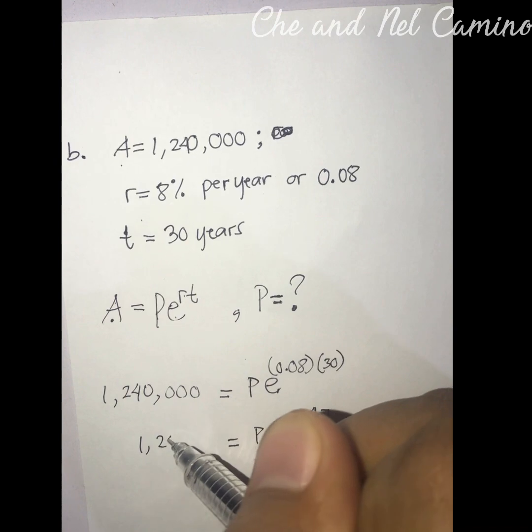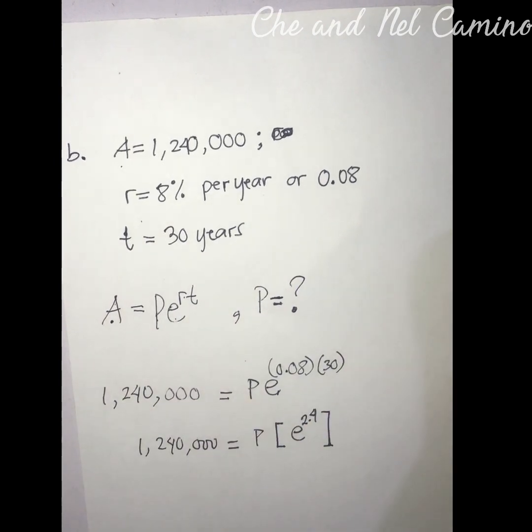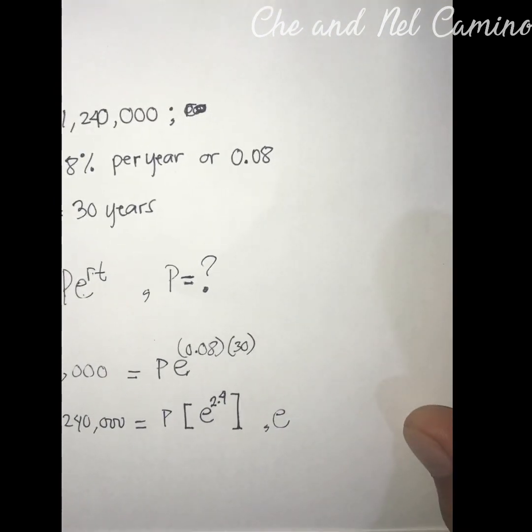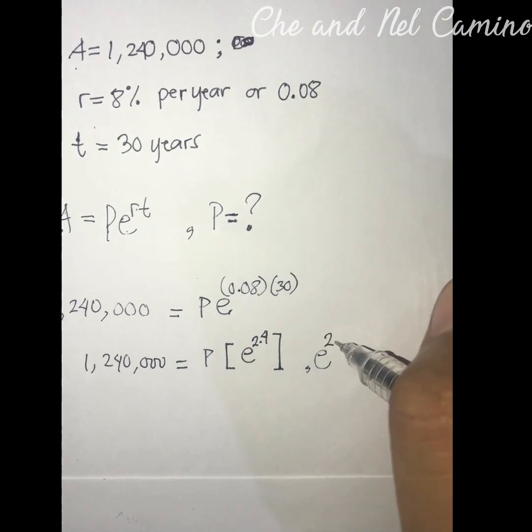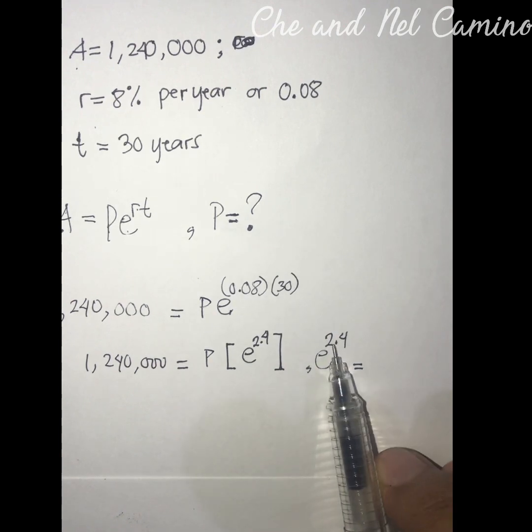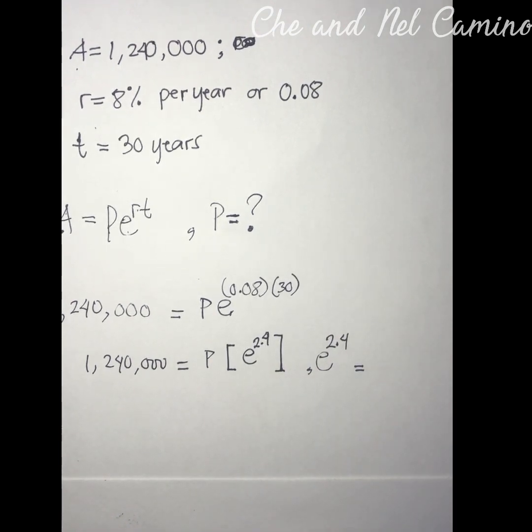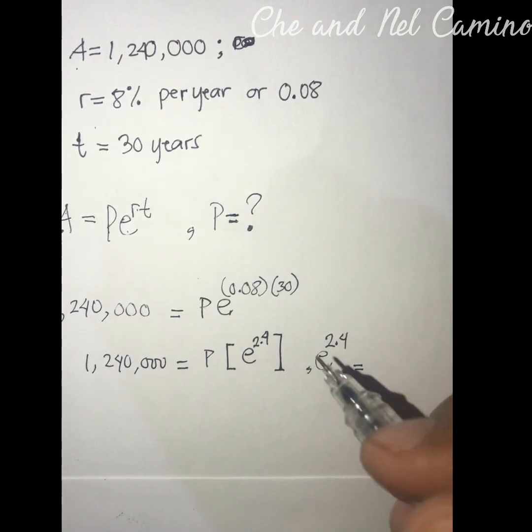1,240,000 equals P times e^2.4. Let's find the value of e raised to the power of 2.4 using your calculator. The value of e raised to the power of 2.4 is